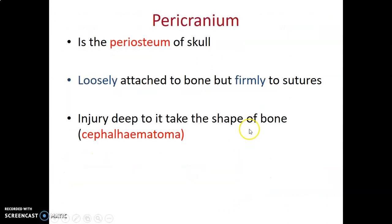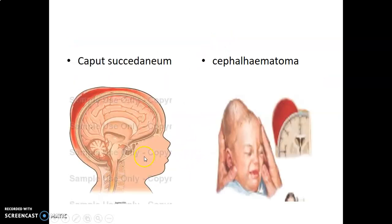The pericranium is made up of periosteum and is loosely attached to the bone but firmly attached to the sutures — the coronal suture, the sagittal suture, etc. Therefore, bleeding under the pericranium produces a cephalohematoma, which is limited by the sutures. Compare this to caput succedaneum, where bleeding of emissary veins in the loose areolar tissue produces generalized scalp swelling, whereas a cephalohematoma is confined to a single bone.